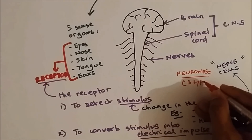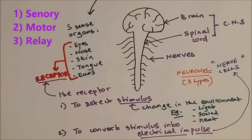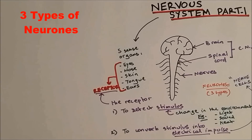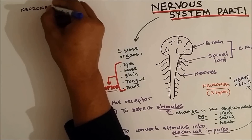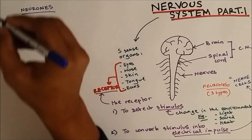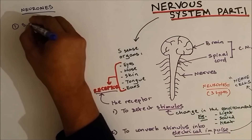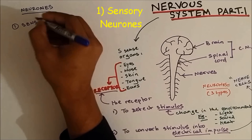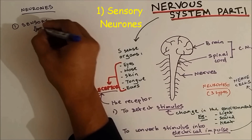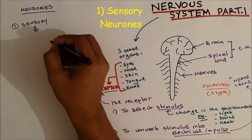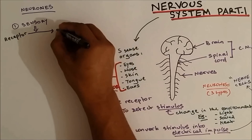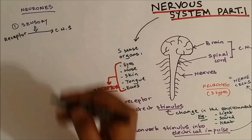There are three types of neurons: sensory, motor, and relay. The first one is called the sensory neuron. Sensory neurons carry electrical impulse from the receptor to the CNS — the Central Nervous System.